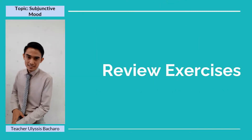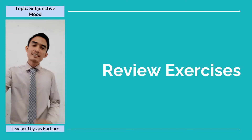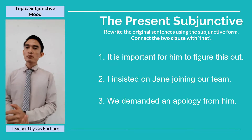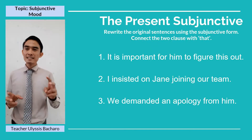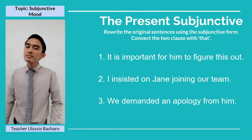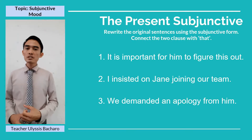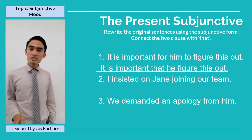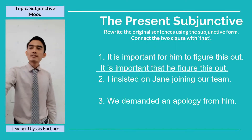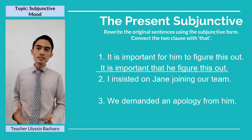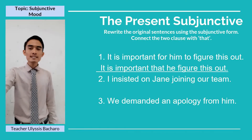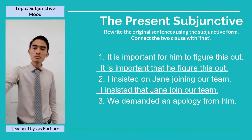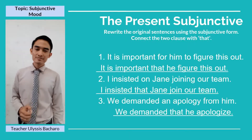Now let's have review exercises. Please interact by answering the exercises. For the present subjunctive, we will rewrite original sentences using the subjunctive form and connect the two clauses with 'that.' Exercise one: 'It is important for him to figure this out' becomes 'It is important that he figure this out.' Number two: 'I insisted on Jane joining our team' becomes 'I insisted that Jane join our team.' Number three: 'We demanded an apology from him' becomes 'We demanded that he apologize.'